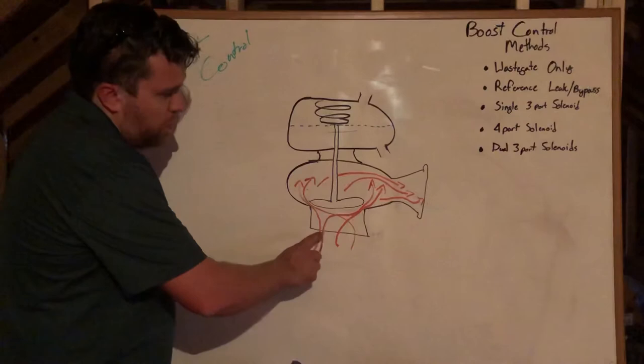This opening here to the top, the blue line represents a diaphragm, so the top cavity is separated from the bottom cavity. If we apply reference pressure to the bottom side, this needs to come from your post-turbo compressor side pre-intercooler. What you're really trying to do here is apply boost pressure to the underside of the diaphragm so that it forces against the spring.